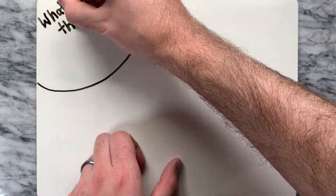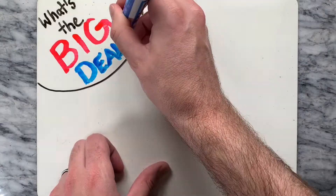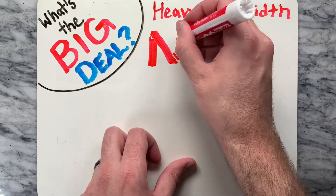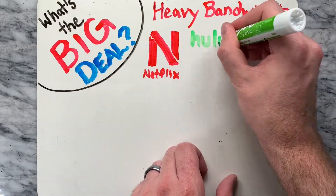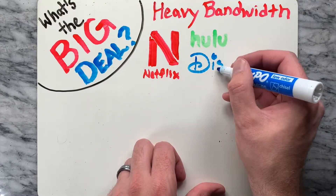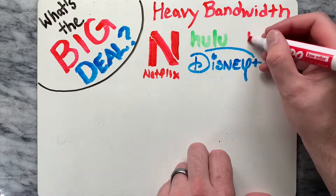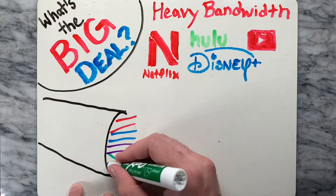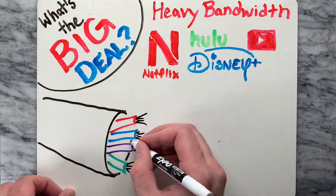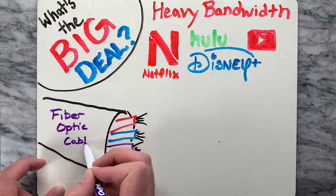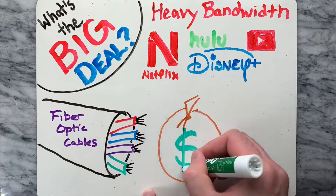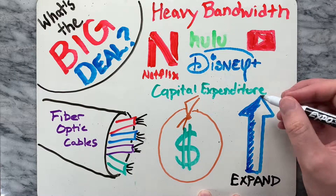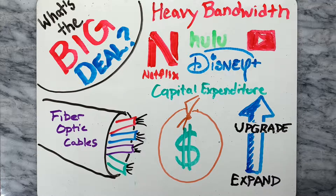So what's the big deal? What primarily complicates the issue is heavy bandwidth internet traffic, such as videos transmitted by Netflix, Hulu, Disney Plus, and YouTube — like this video you're watching now. The internet is not an invisible wireless infrastructure; it depends on an extensive network of underground fiber optic cables. Fiber optic cable networks have a fixed capacity and cost billions to install and hundreds of millions just to upgrade. As internet traffic has expanded massively over the years, ISPs have to make substantial capital expenditures to keep up with increased demands, continually expanding and upgrading the network of underground cables.